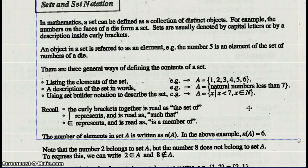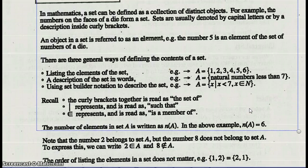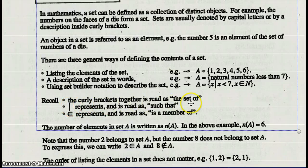Recall, the curly brackets together is read as the set of. This line straight down represents such that, and this interesting looking E is called a member of. So if I want to read the set builder notation, the set of X such that X is less than 7 or X is an element of the natural numbers.